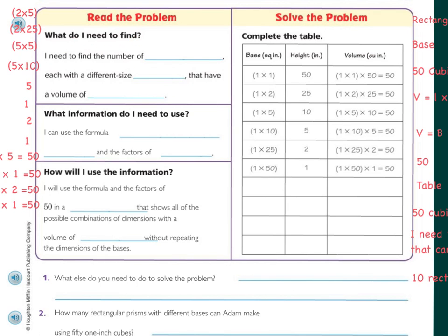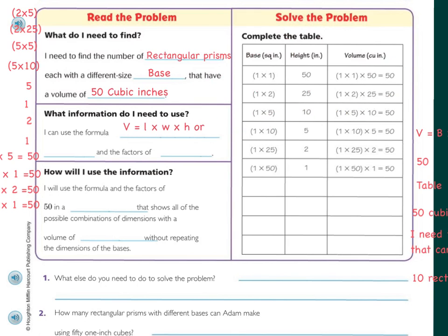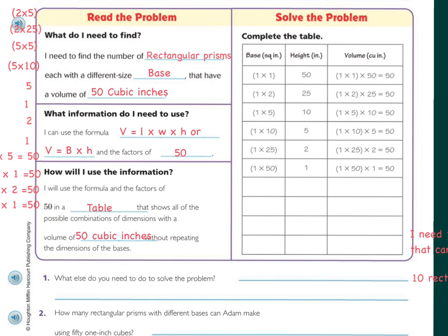First, what do I need to find out? I need to find the number of rectangular prisms, each with a different size base, that have a volume of 50 cubic inches. What do I need to use? I can use the formula V equals L times W times H, or V equals B times H, base times height. The factors I need are the factors of 50. I will use the formula and the factors of 50 in a table that shows all possible combinations of dimensions with a volume of 50 cubic inches, without repeating the dimensions of the base.